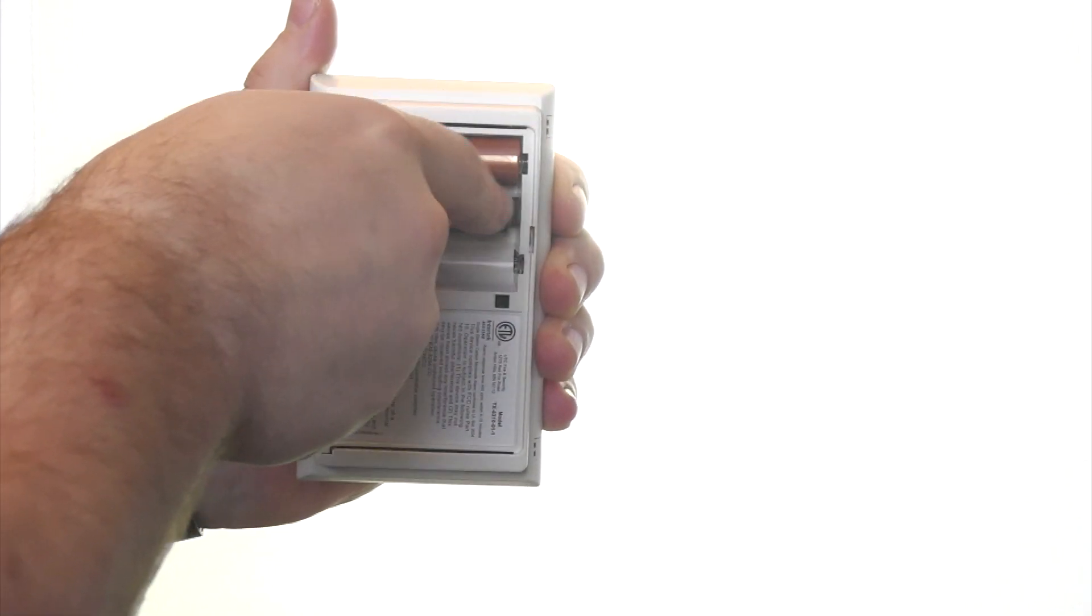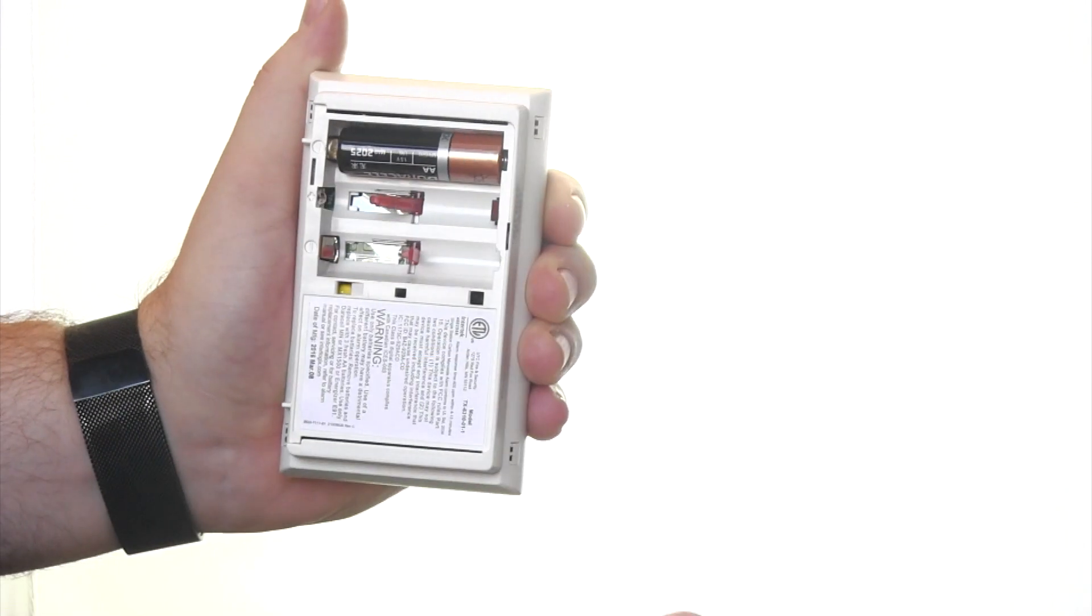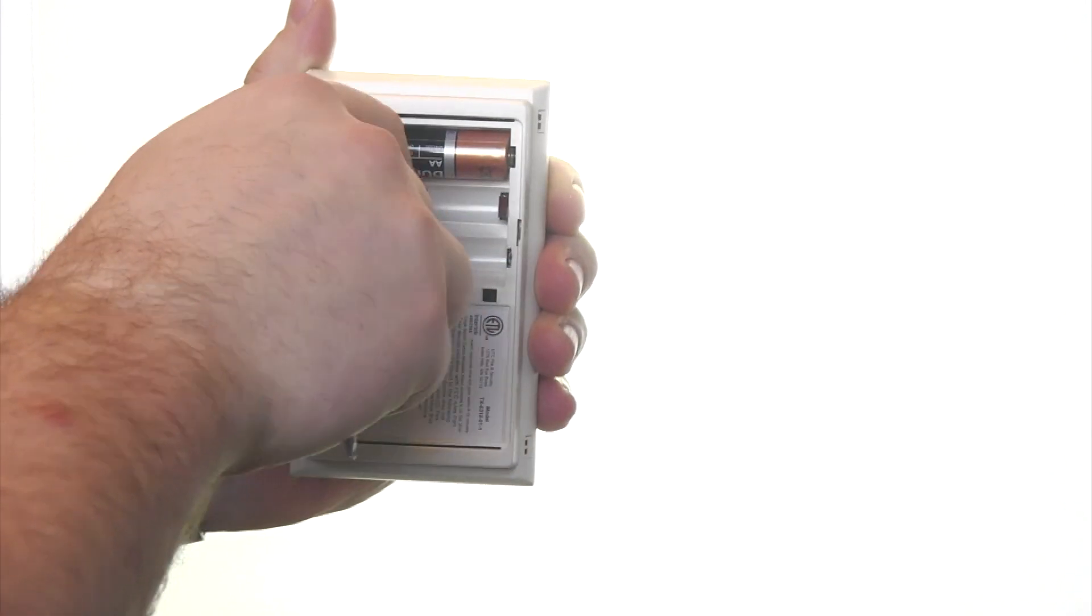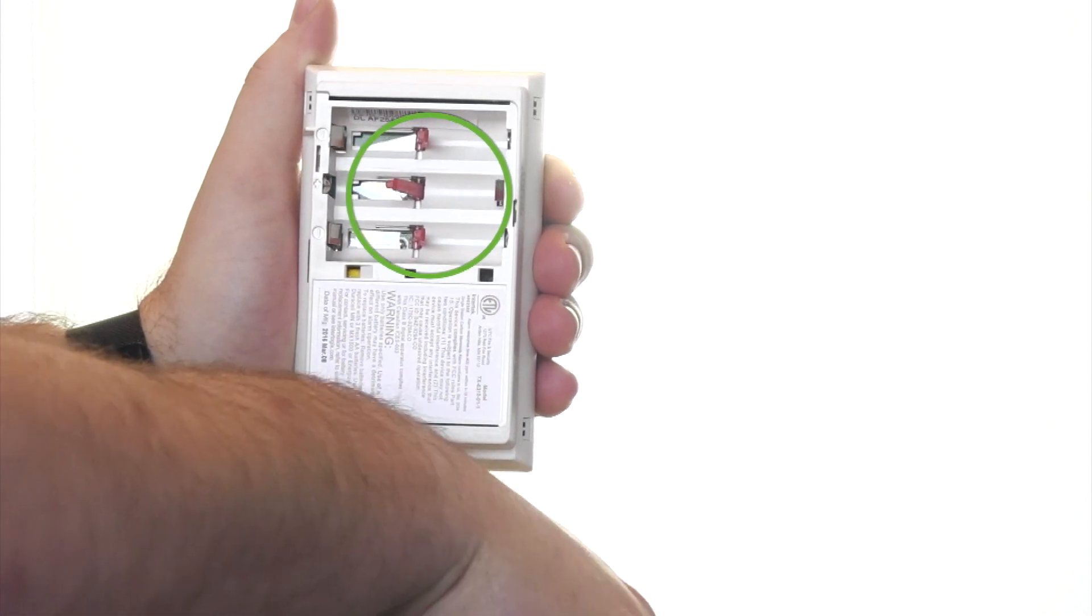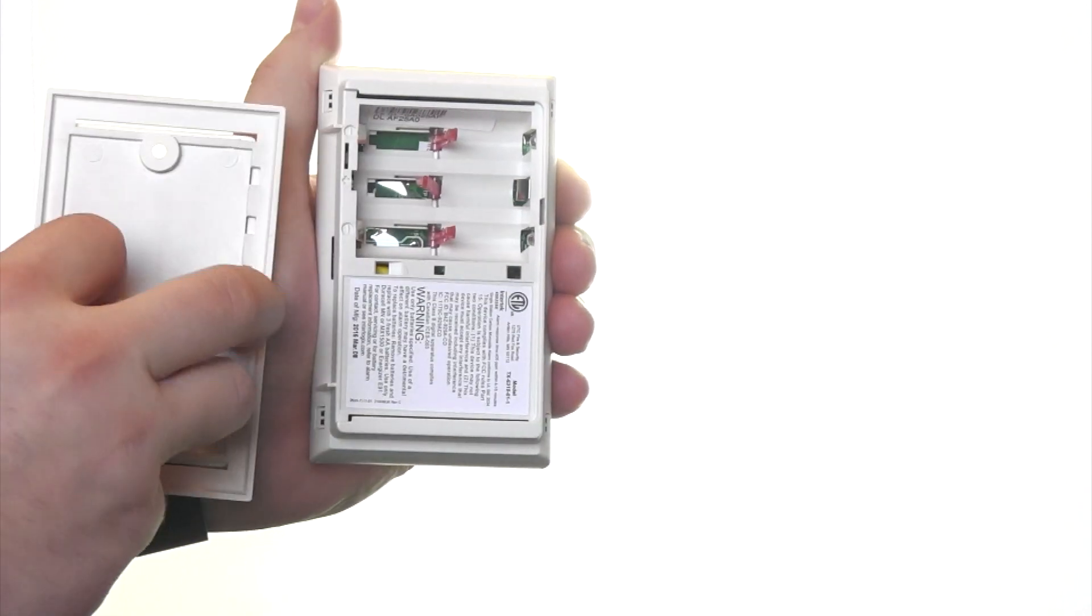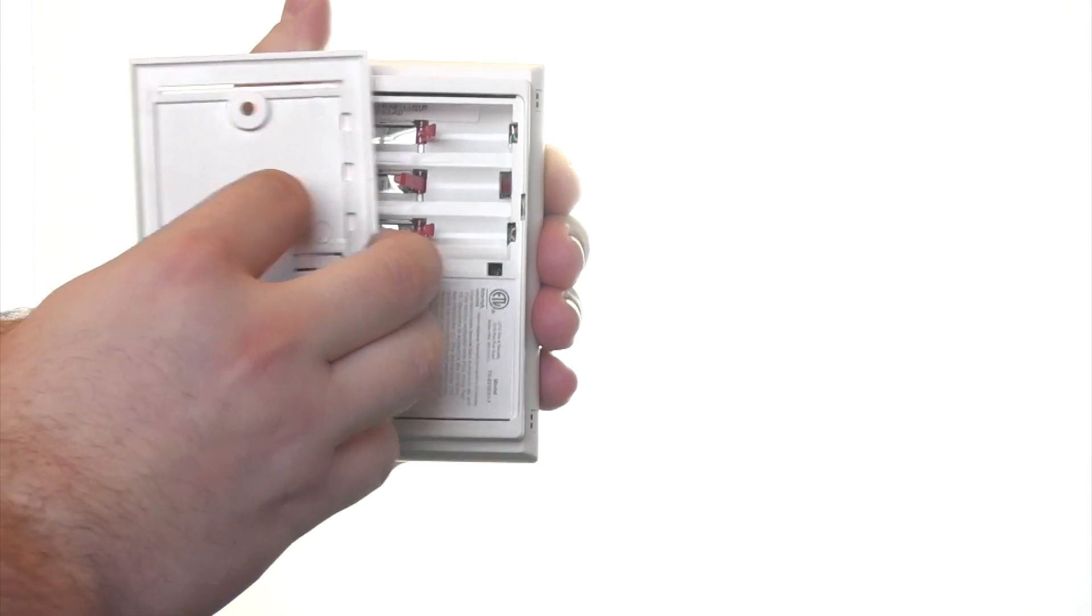This is actually a safety measure to ensure that batteries are inserted again before we attach the device back to the wall. These red bars will prevent us from sliding on and putting the carbon monoxide detector up when it is no longer functioning.